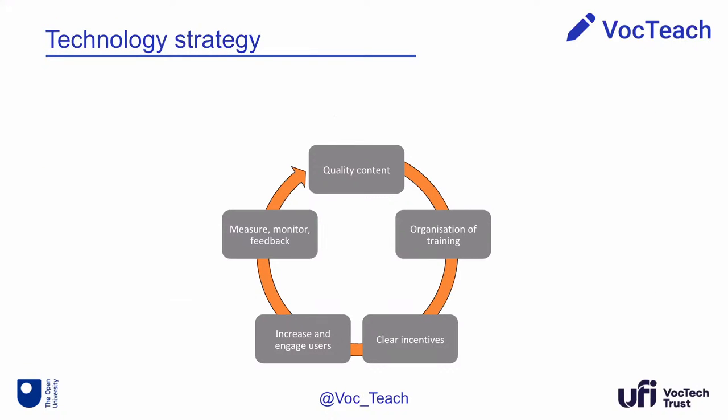The technology strategy of VocTeach is based on the realization that quality of content is necessary but not sufficient. We also need to organize this quality content so that people can access it at the right time in the right context. And that is still not enough — we need clear incentives for people to actually come to the platform and engage with that content. By creating these incentives, this will lead to increasing and engaging users and the whole community. By doing so, we need to take on board the fact that we must also measure, monitor, and get feedback from this community to improve the quality of the content.